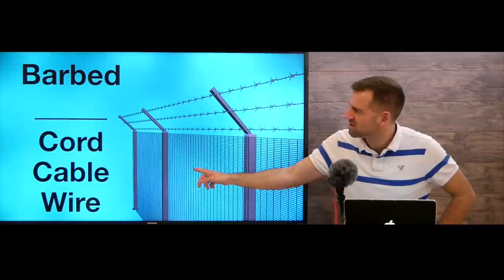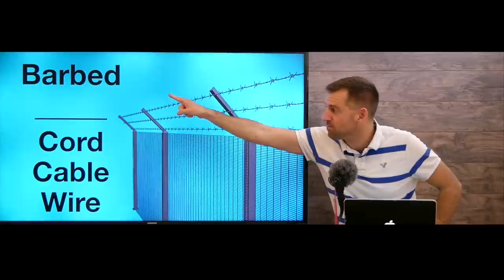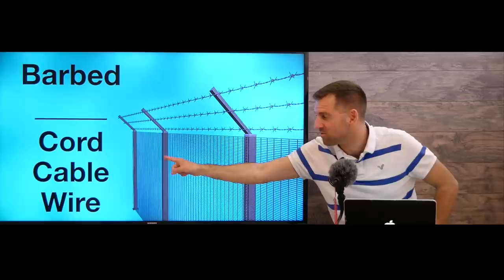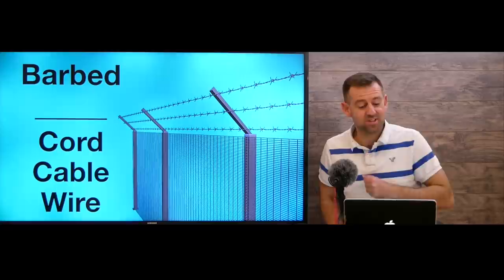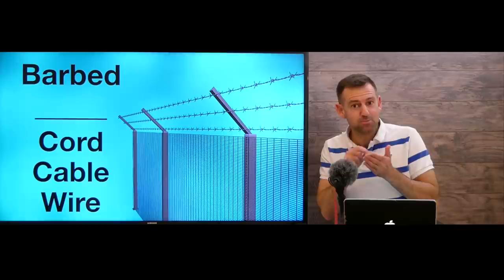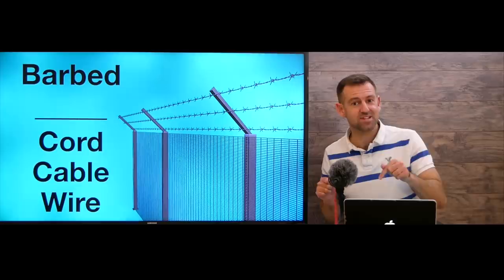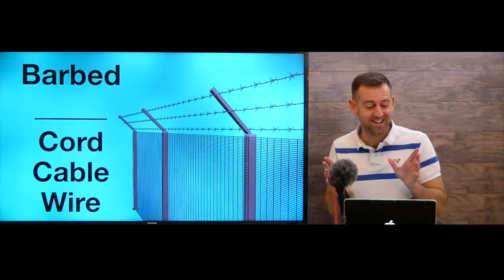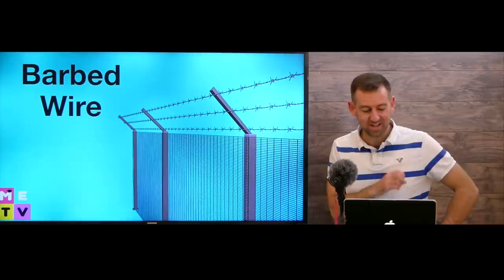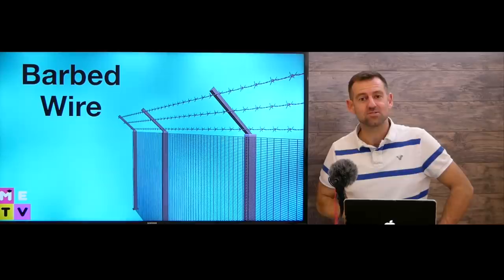Take a look at this thing here. What is this? This is a fence. What kind of fence is this? This is a barbed — which word? A barbed cord fence, a barbed cable fence, or a barbed wire fence? You should keep track of how many you get right and tell me at the end of this lesson in the comments how many you got right and how many you got wrong. The answer is barbed wire. Barbed wire is the right answer.